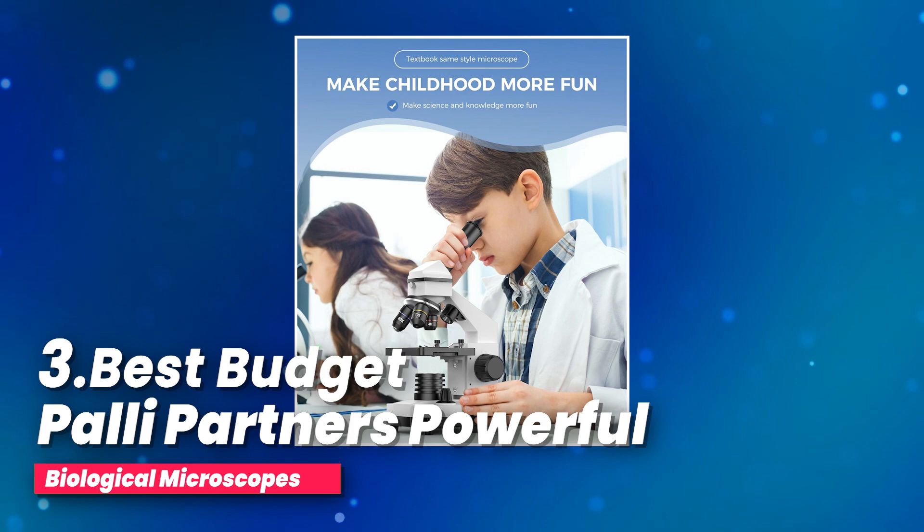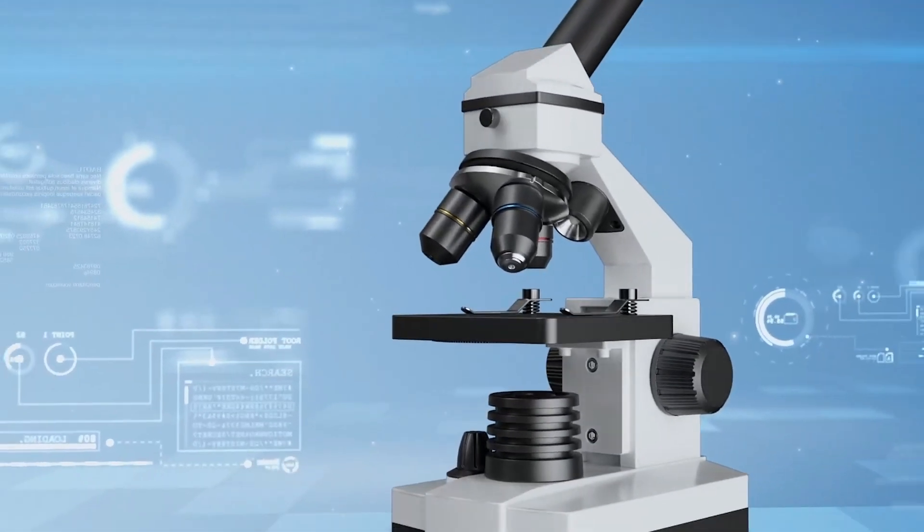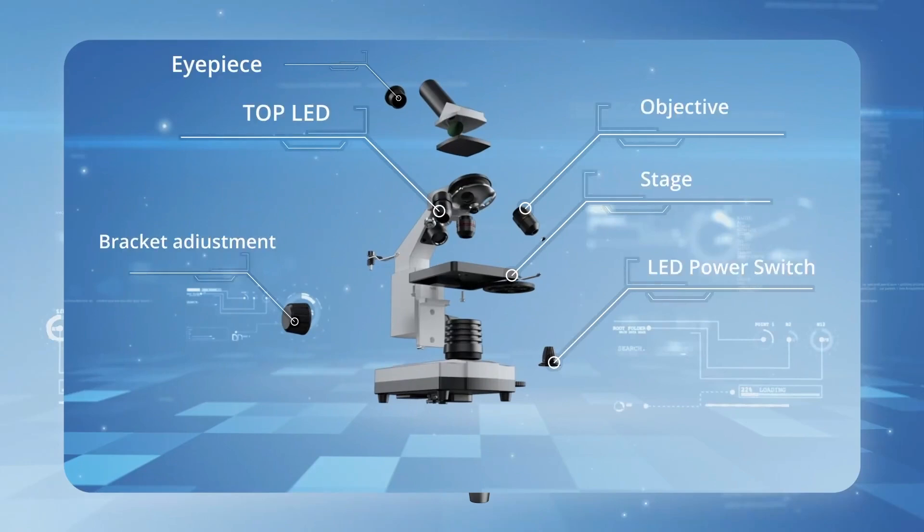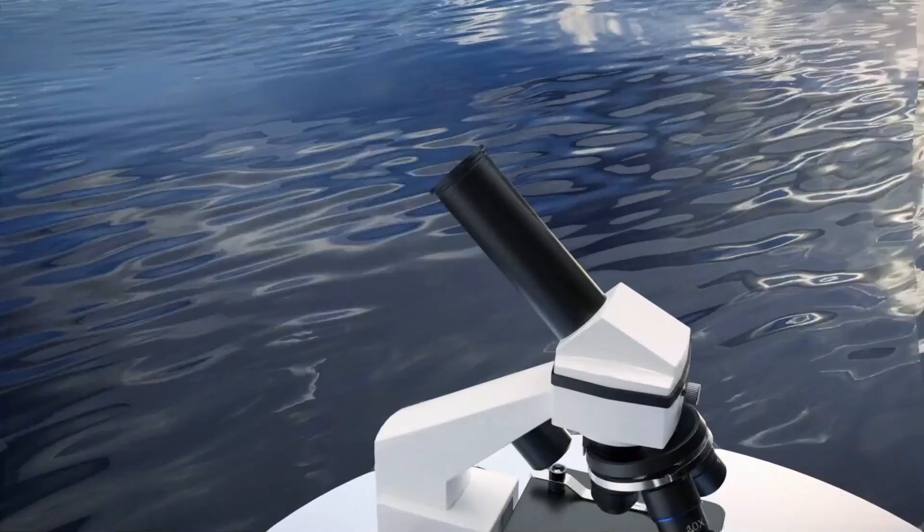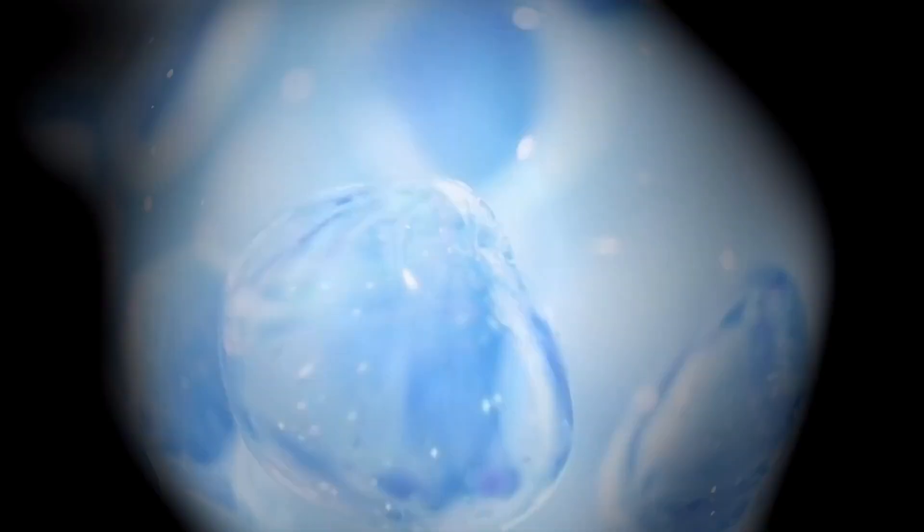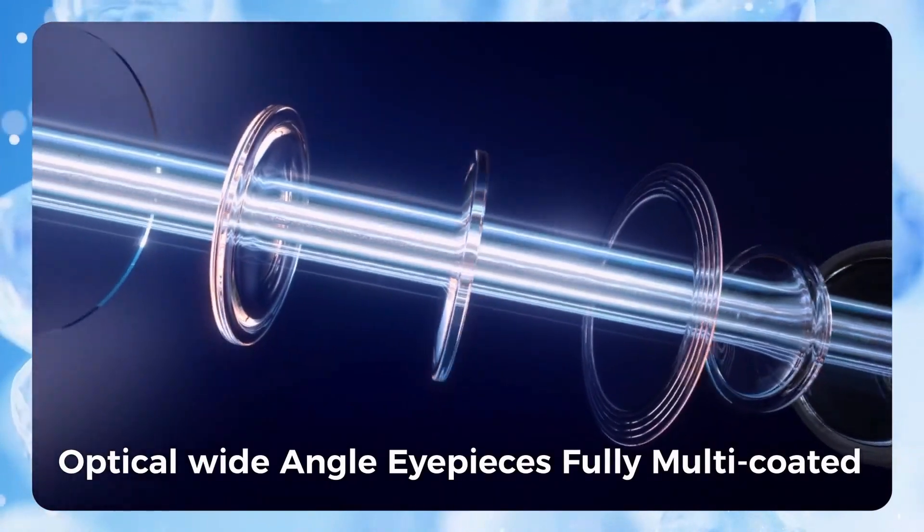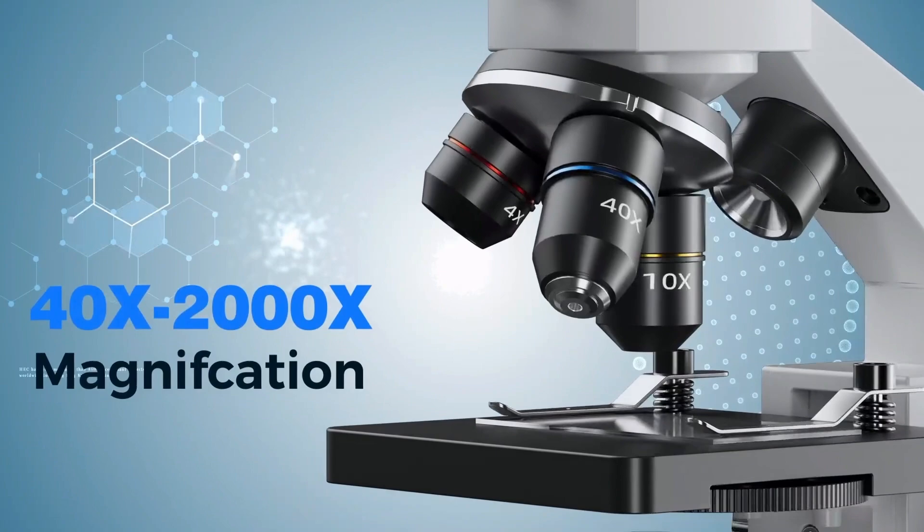Number three, best budget: Halle Partners powerful biological microscopes. Looking for a powerful microscope that brings the tiny details of the world into sharp focus? Look no further. This high magnification model features a WF-25X eyepiece, which can be used alone or paired with a 2X lens. When you combine this with its 4X, 10X, and 40X objective lenses, you'll enjoy an impressive six different magnification options.